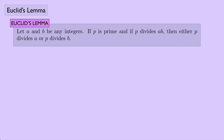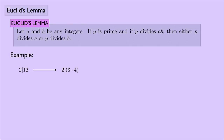Now let's look at Euclid's Lemma. It says: let a and b be any integers. If p is prime and p divides a times b, then either p divides a or p divides b. This is the same Euclid from geometry. As an example, 2 divides 12, and 2 is prime. So if 2 divides 12, that means 2 divides 3 times 4 — just another way of writing 12.